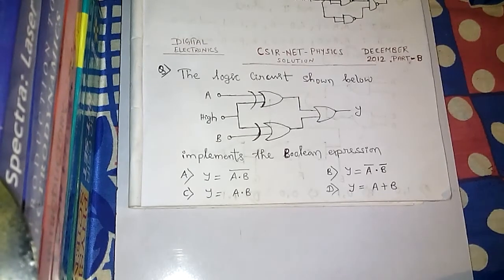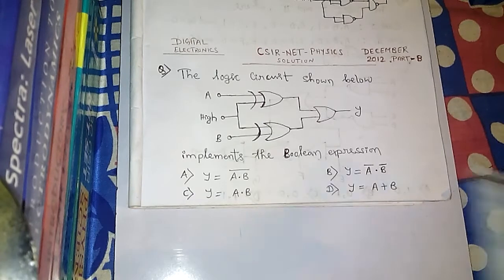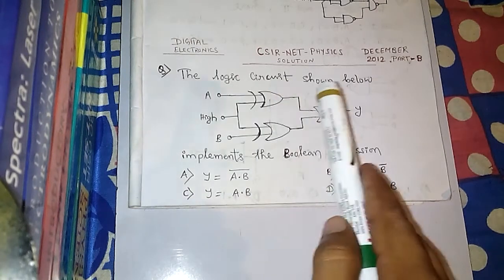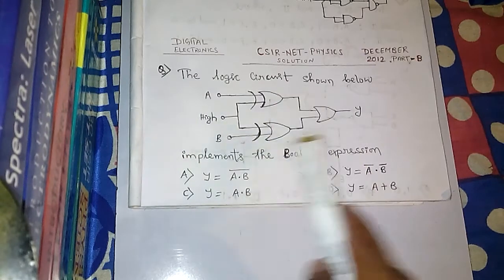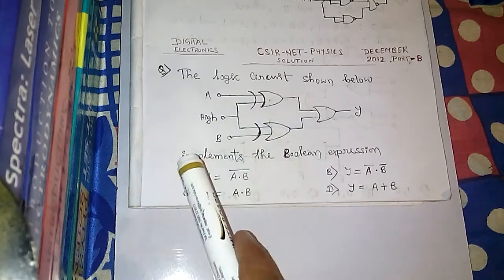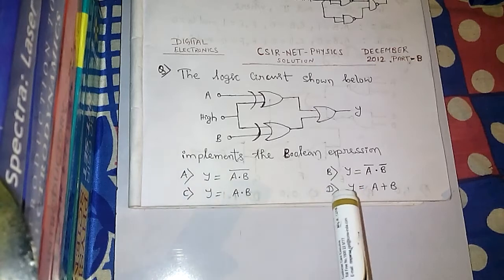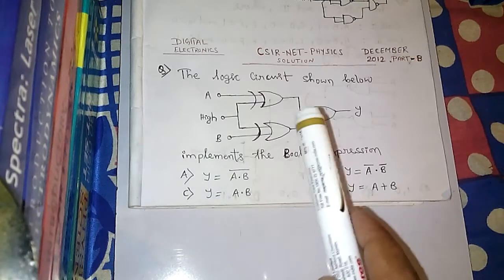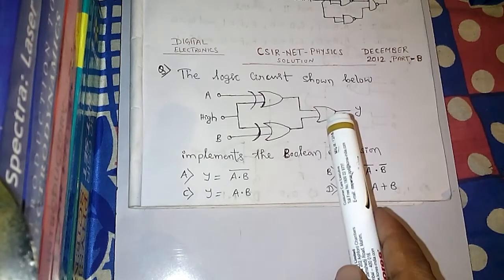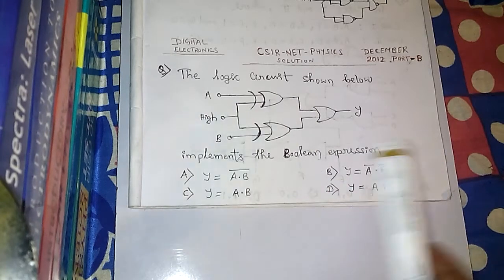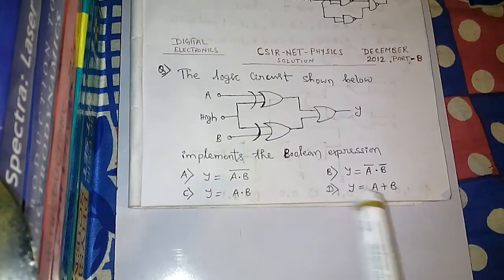Hey friends, this is Vidhan, welcome to my channel. Today we have a problem from digital electronics from December 2012 part B. It says the logic circuit shown below is also called a digital circuit, and the output implements the boolean expression A, B, C, D. What it means to ask is that the boolean expression of this given digital circuit is equal to which boolean expression out of four given options.